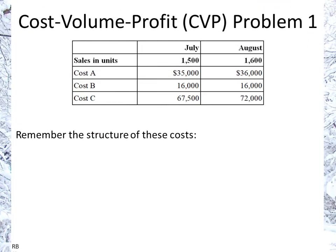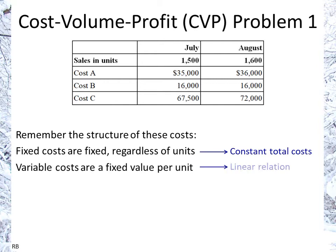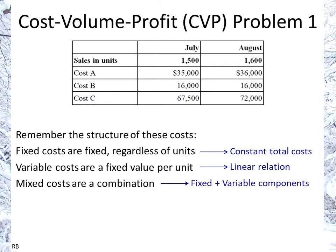Let's recall the structure of the three types of costs. Fixed costs are fixed regardless of the number of units, so the way of recognizing a fixed cost is you're going to have a constant total cost. Variable costs are fixed on a per-unit basis, so there's going to be a linear relationship — if 2 units cost 2x, 5 units will cost 5x, and 10 units will cost 10x. Mixed costs are by definition a combination of the two: we have a fixed component and then a variable component.